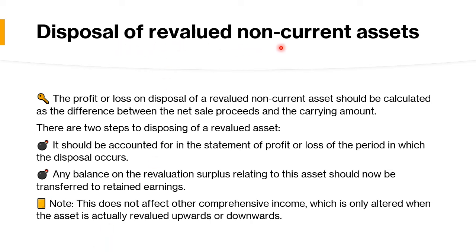Disposal of a revalued non-current asset: the profit or loss on disposal should be calculated as the difference between the net sale proceeds and the carrying amount. For example, suppose the carrying amount after depreciation is $200,000 and the sale price is $250,000, so the net difference is $50,000. This $50,000 has to be calculated and transferred to the statement of profit and loss.